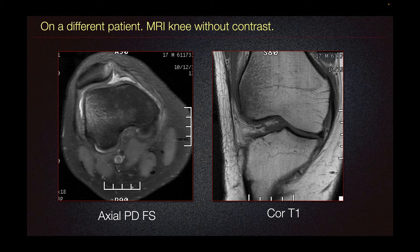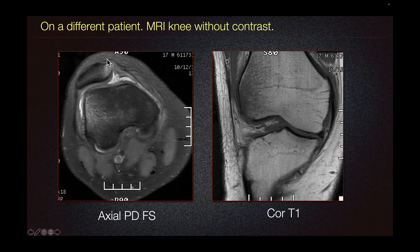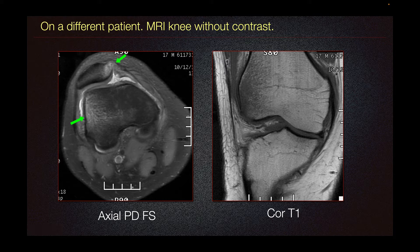This is a different patient who presented after a twisting injury. MRI knee without contrast was performed. On the axial proton density fat-sat imaging, we can see bone contusion at the medial patellar facet and in the lateral femoral condyle, characterized by increased signal or edema. These are typical findings of kissing contusion seen in patellar dislocation.